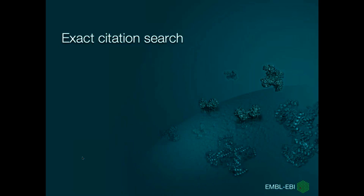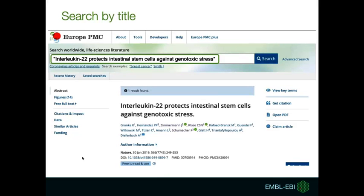Now we will give an overview on how to do an exact citation search. The most common way you could look for a specific publication would be to type the title in the search bar.